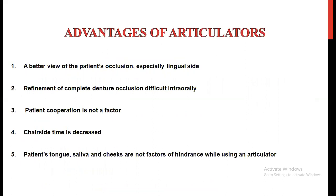What are the advantages of an articulator? Intraorally, we cannot properly visualize the occlusion of the patient, especially in the case of the lingual side. By using the articulator, it helps in a better view of the patient's occlusion. Second, it helps in the refinement of the complete denture occlusion, which is difficult intraorally. Third, patient cooperation is not a factor because we can do all the adjustments chairside using this articulator, and we can also reduce the chairside time. Finally, the patient's tongue, saliva, and cheeks are not factors of hindrance by using an articulator.